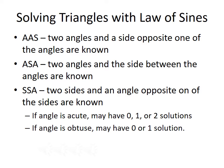Note that with a side-side-angle triangle, if the angle is acute, there's a possibility of having zero, one, or two triangles satisfying the given conditions. If the angle is obtuse, you can have one or two solutions. To use the Law of Sines, you need three pieces of information, and two of them must be an angle and the side across from it.